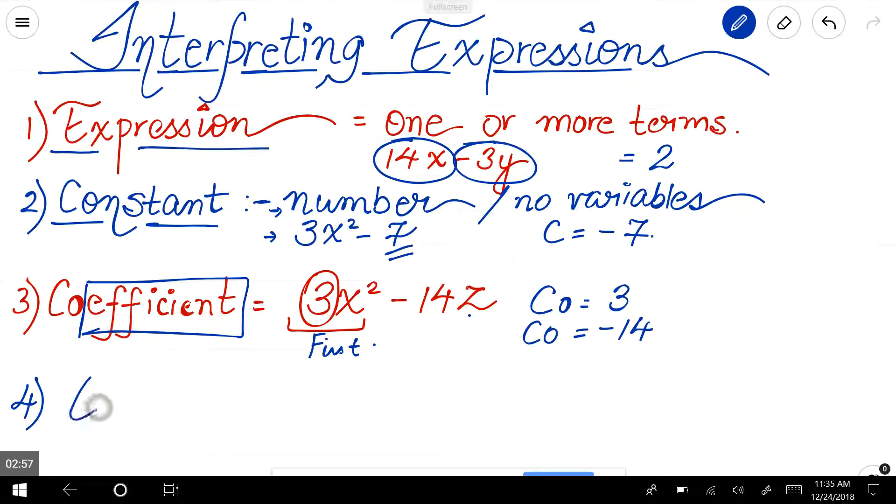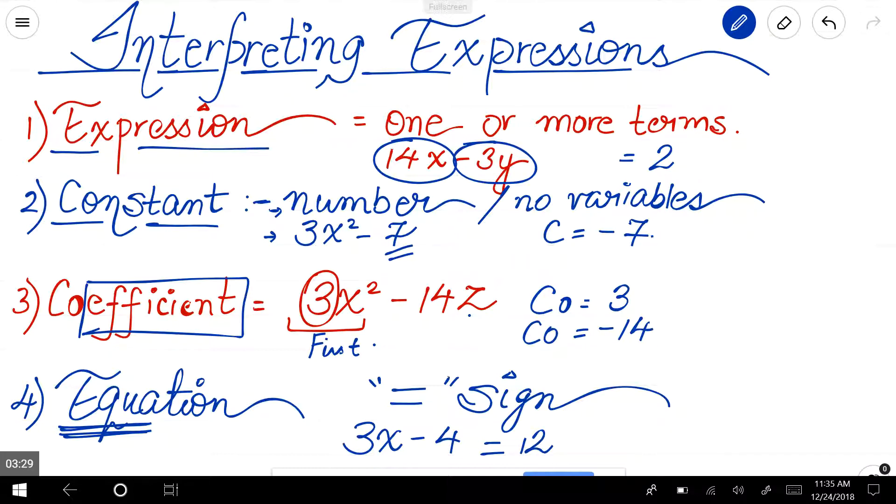Next, equation. It's very important to remember the difference between expression and equation. Equation is always an algebraic expression which has an equal sign in it. An example of an equation is 3x minus 4 equals 12, which you have seen a lot of equations in algebra. But always remember, without an equal sign it becomes an expression. With an equal sign, it's an equation.